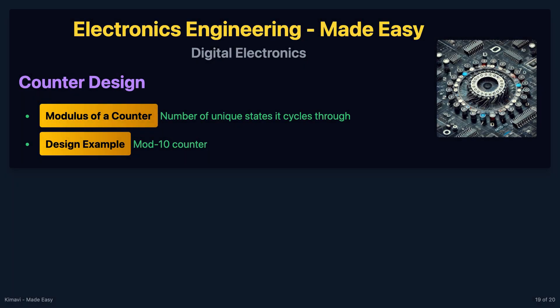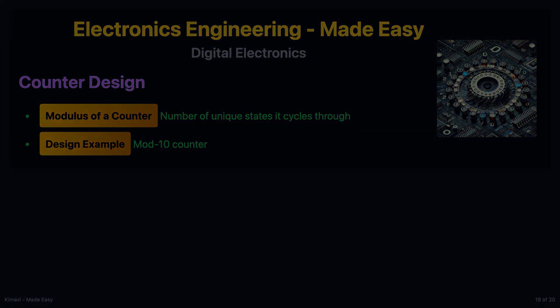The modulus of a counter is the number of unique states it cycles through. For example, a mod-10 counter cycles through 10 states from 0 to 9. To design a mod-10 counter, you need a 4-bit counter that resets to 0 after reaching 9.